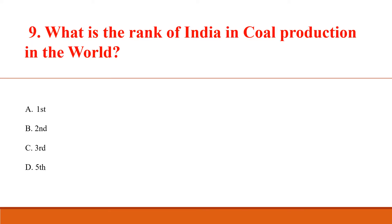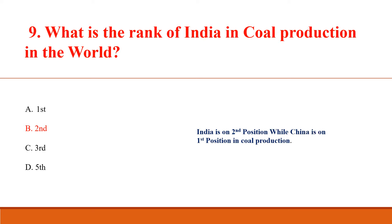What is the rank of India in gold production in the world? Answer B: 2nd. India is in 2nd position while China is in 1st position in gold production.